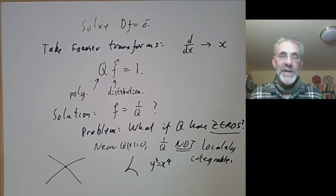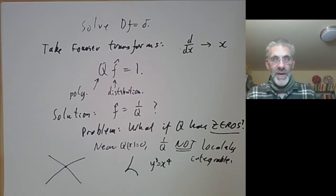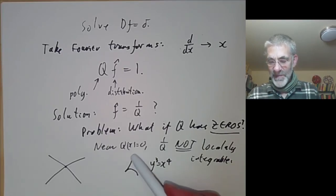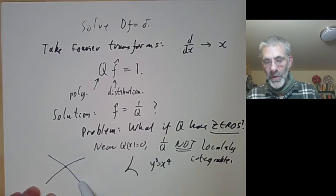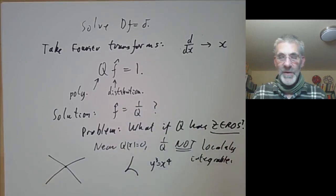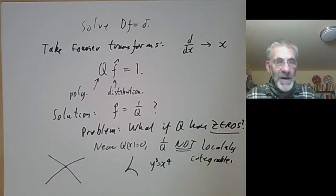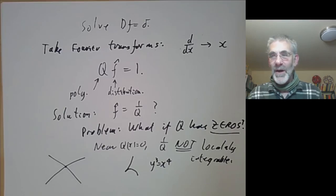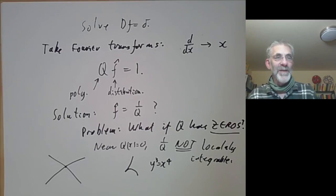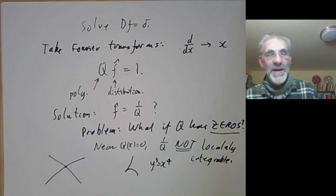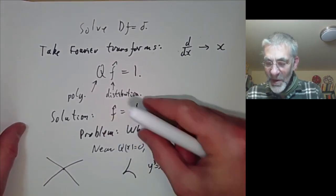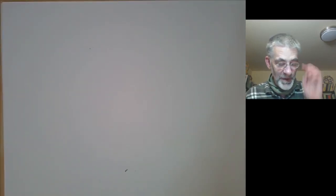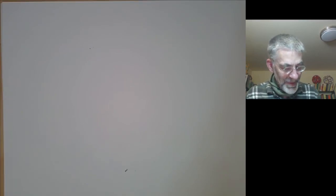One way to solve this is using a really big sledgehammer: Hironaka's theorem about resolution of singularities. What Hironaka's theorem says roughly is that any singularity in high dimensions can be transformed by a blow-up operation into a singularity with normal crossings, and then you can find a distribution 1/q. However, Hironaka's theorem was one of the hardest theorems in mathematics when it came out, and although it's been simplified a lot, it's still pretty hard going. It's much easier to use the Bernstein-Sato polynomial.